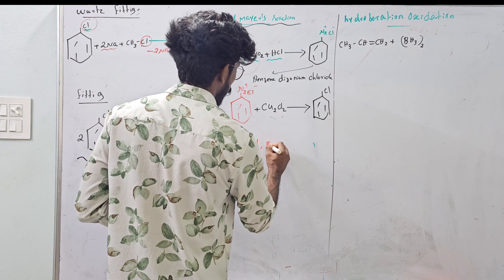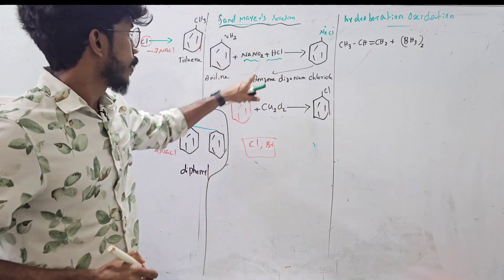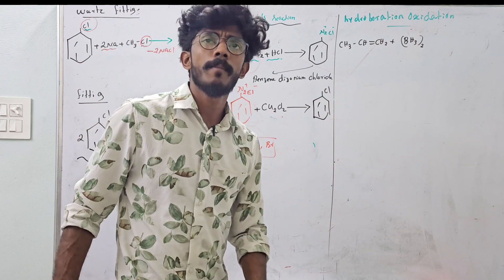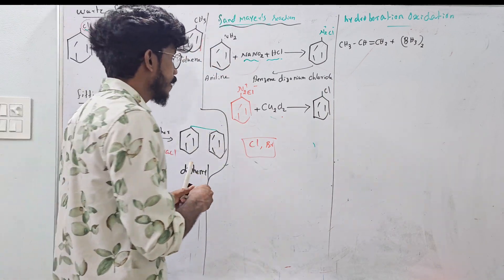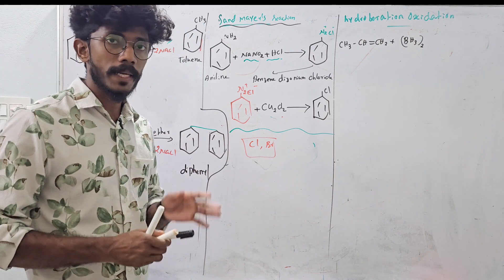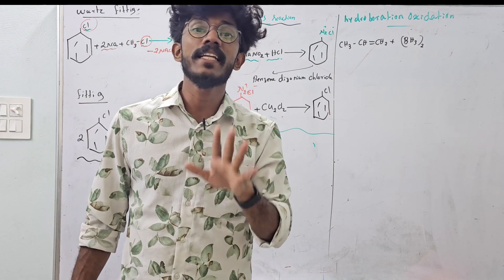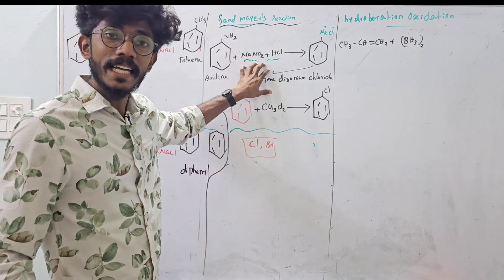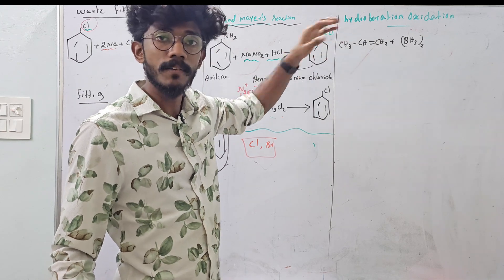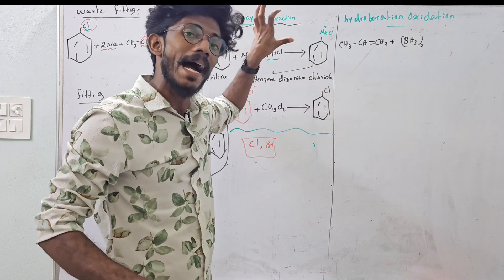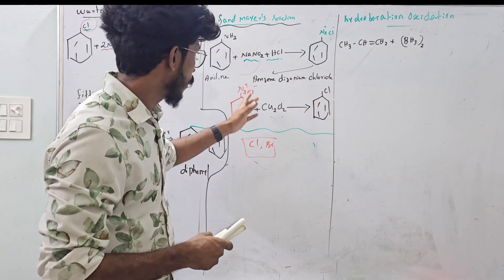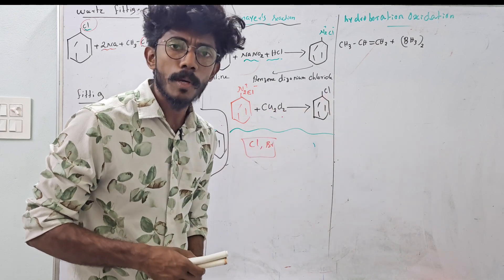You treat chlorobenzene. If you get bromine, you treat copper bromide to get bromobenzene. Now the first step: aniline plus NaNO2 and HCl gives N2Cl — Benzene Diazonium Chloride. Thus obtained Benzene Diazonium Chloride is treated with halogen to form chlorobenzene. If you use Benzene Diazonium Chloride with Cu2Cl2 you get chlorobenzene; with Cu2Br2 you get bromobenzene.